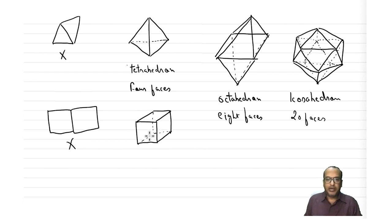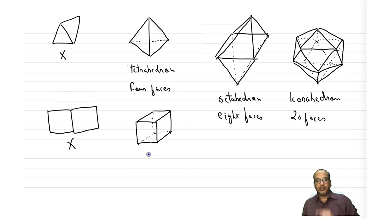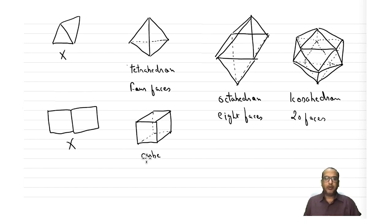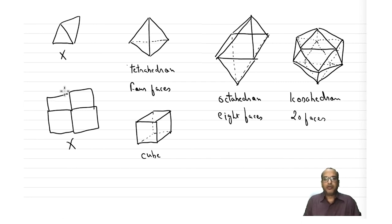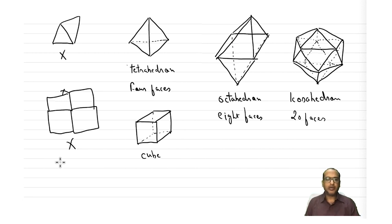Moving to squares: combining three squares at a vertex forms a cube — at each vertex three faces connect, making another regular polyhedron. Combining four squares at a vertex gives a planar structure again, so the cube is the only regular polyhedron from squares.